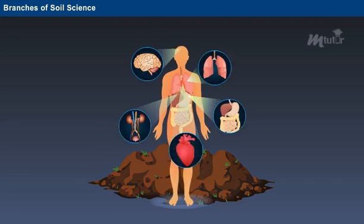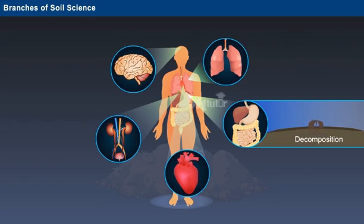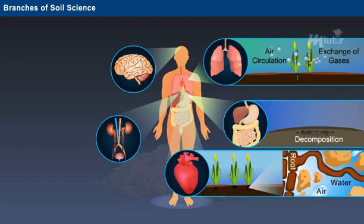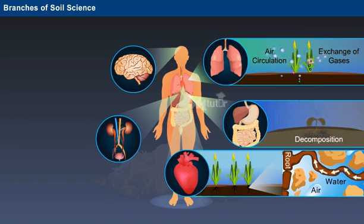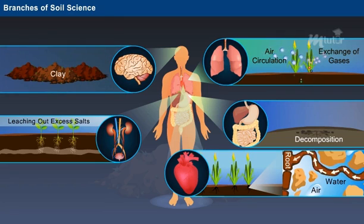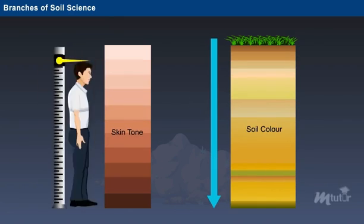Soil processes can be compared to various systems of human body. Digestive system can be compared to soil decomposing ability. Respiratory system can be compared to air circulation and exchange of gases by soil. Circulatory system can be compared to the water movement within the soil system. Excretory system can be compared to the ability of soil in leaching out the excess salts. The mineral clay present in soil acts as the brain while soil color and depth are compared to human skin tone and height.